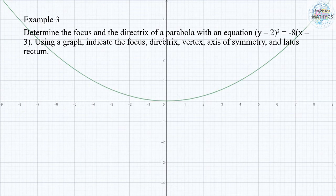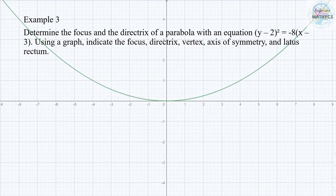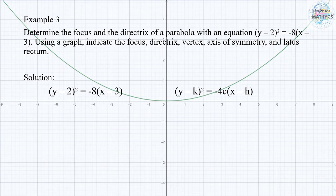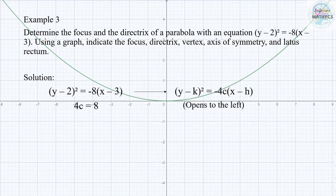Number 3: determine the focus and directrix of a parabola with an equation (y minus 2) squared equals negative 8 times the quantity of (x minus 3). Using a graph, indicate the focus, directrix, vertex, axis of symmetry, and latus rectum. Since it follows the form (y minus k) squared equals negative 4C times the quantity of (x minus h), it opens to the left. We solve for the focal length by equating 4C to 8, giving us a result of 2.